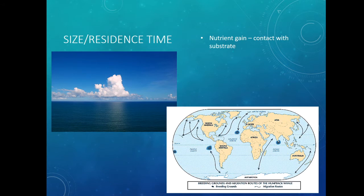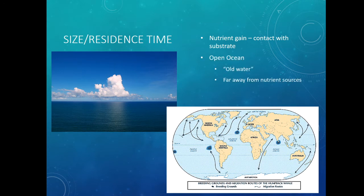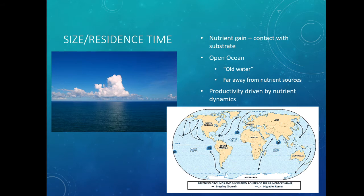Because water takes forever to circulate, the nutrients are bound up and it's hard to get new nutrients into the system. Think about the great big open ocean — any spot out there is a long ways away from any nutrients. You only gain nutrients when you get in contact with the substrate. So the open ocean might be several thousand miles away from any nutrient source, in old water that has been sucked dry of nutrients for potentially hundreds of years. All productivity in the ocean is really driven by nutrient dynamics — it's all bottom-up.